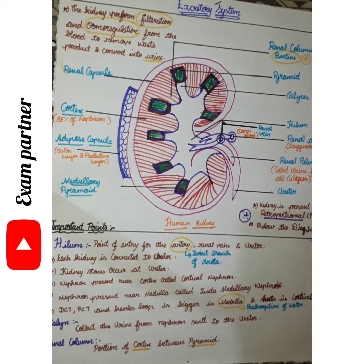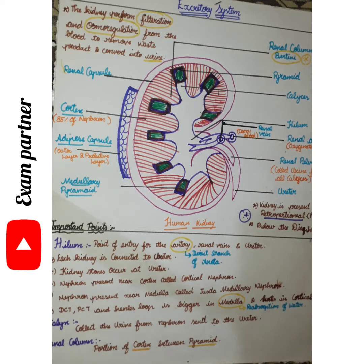In class 11th portion, you will memorize the first four chapters. If you memorize those first four chapters, you will be fine. The chapters include Animal Kingdom, Plant Kingdom, and Biological Classification.